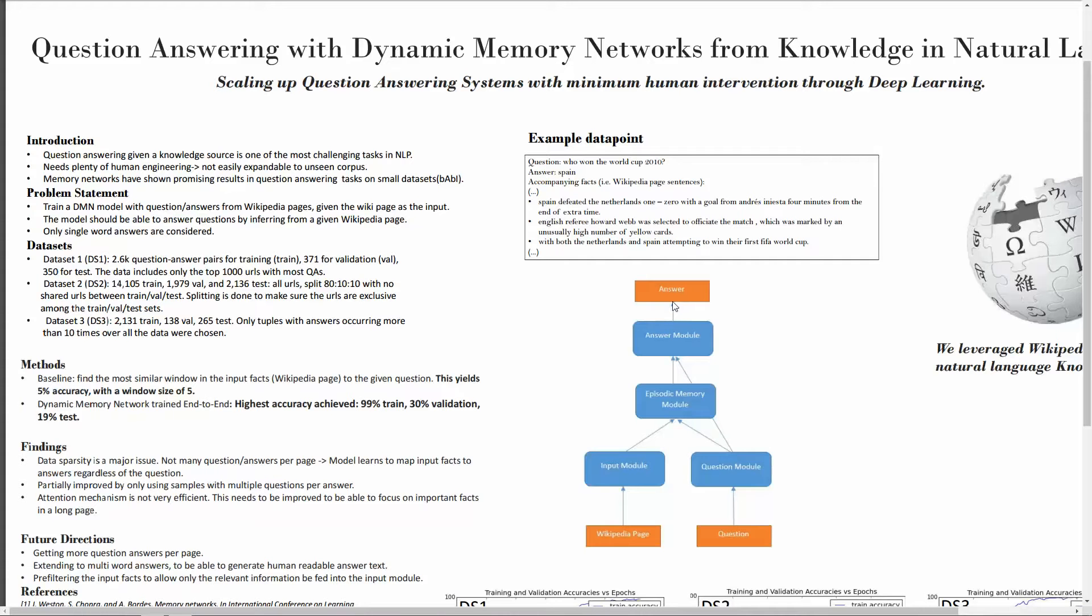In this project we only use single word answers to make it easier for the model. Our dataset is from the Microsoft Bing explanatory question answer dataset, which is a very high quality dataset filtered through judges. We created three datasets from the same data with different configurations. The first dataset has 2,600 question answers for training, 371 for validation, and 354 tests. And also the data only includes the top 1,000 URLs with most question answers.